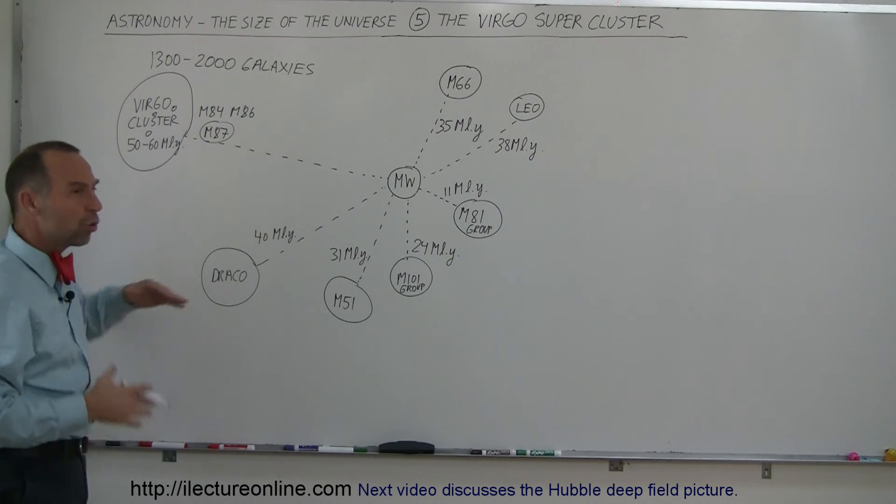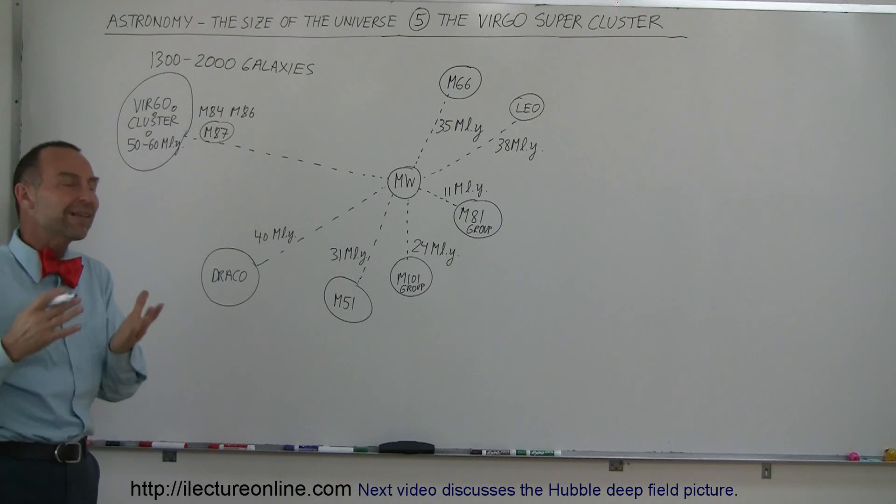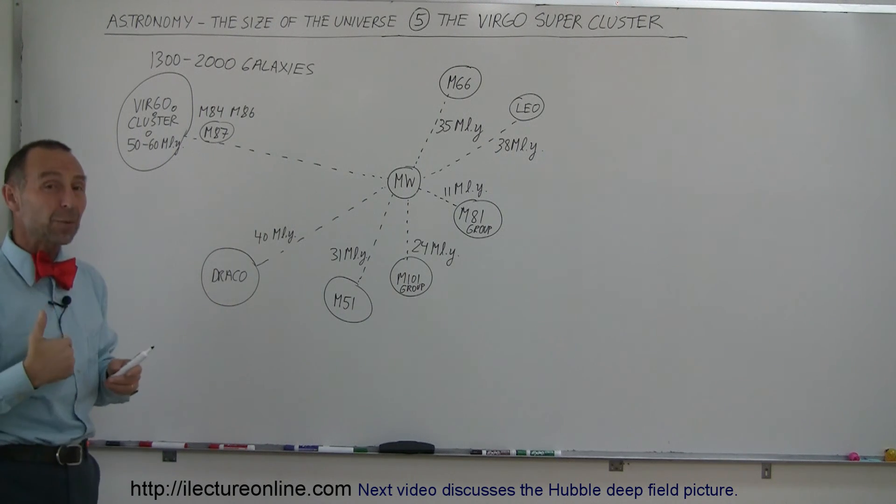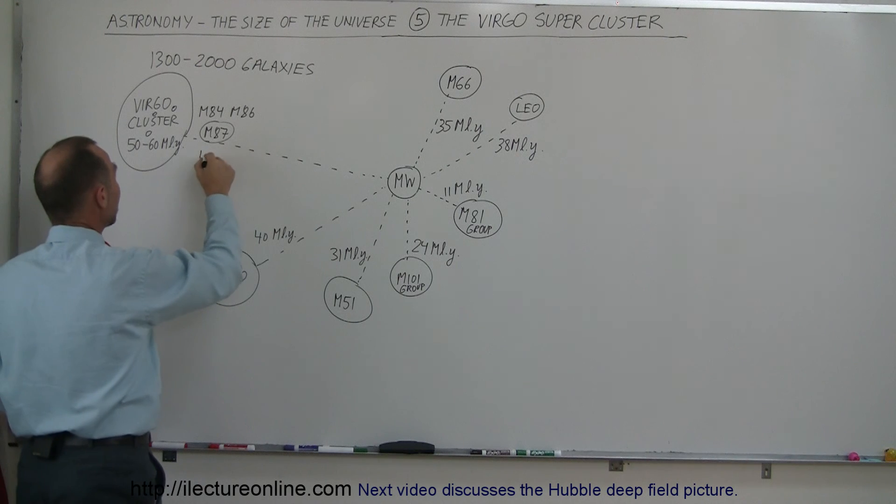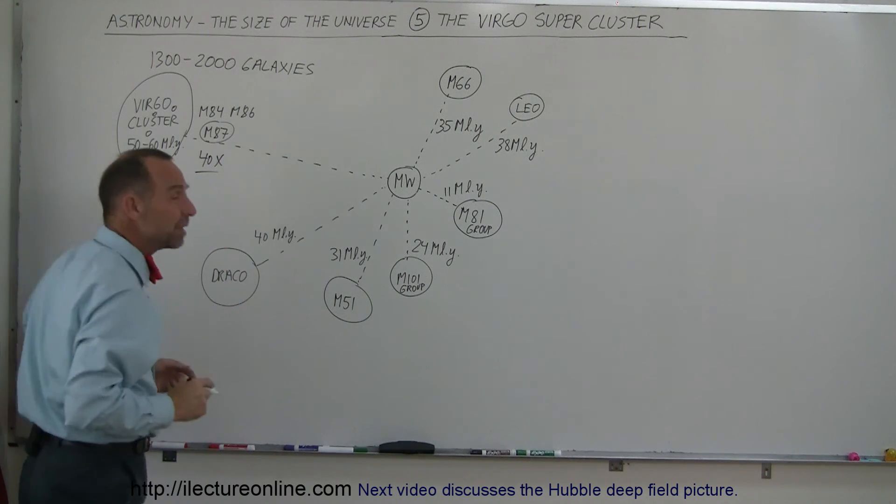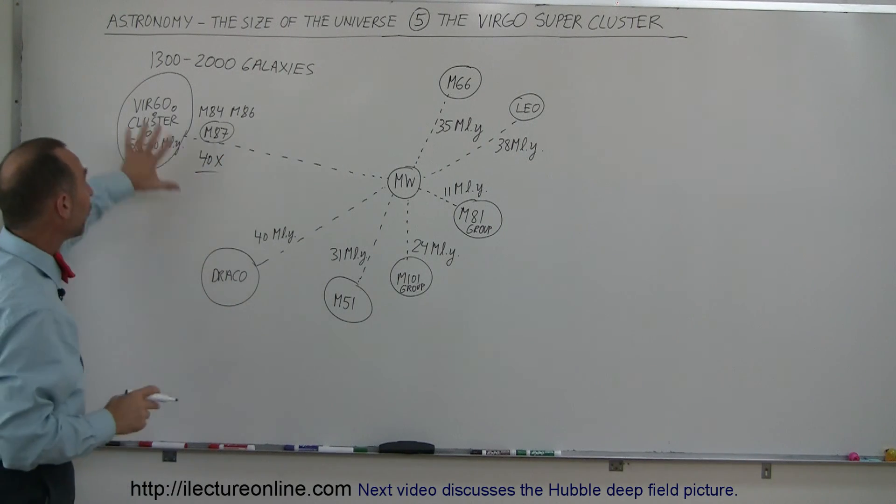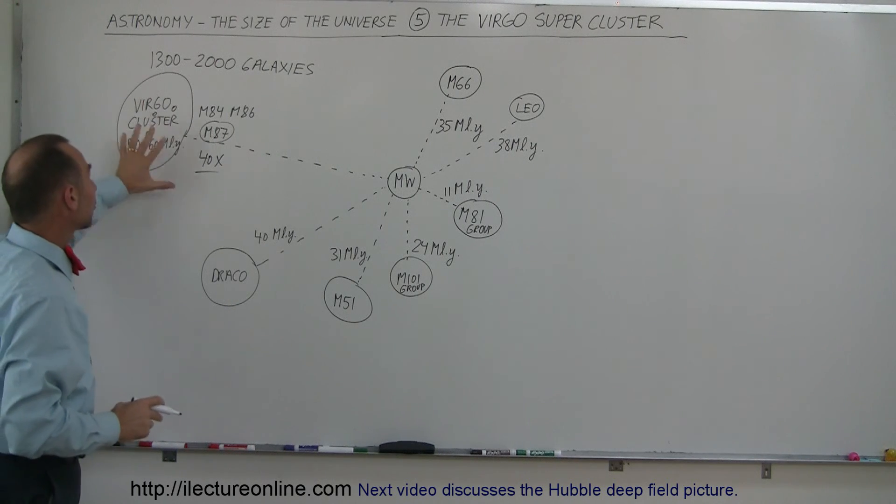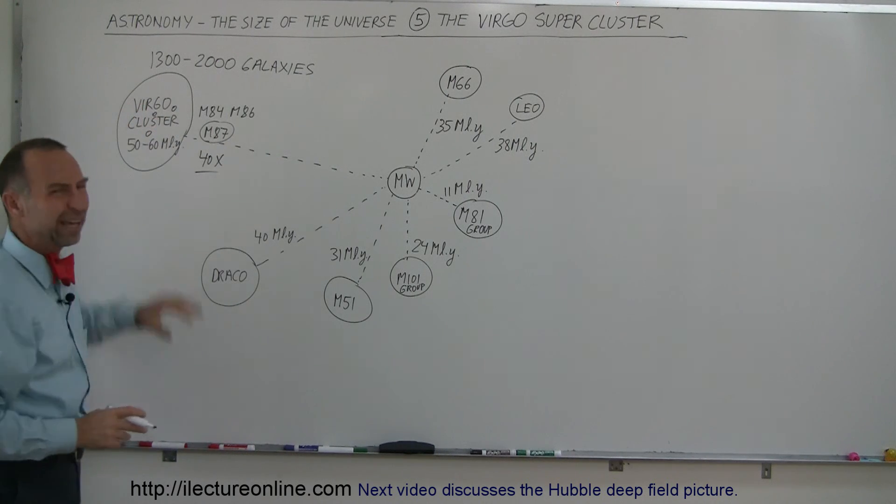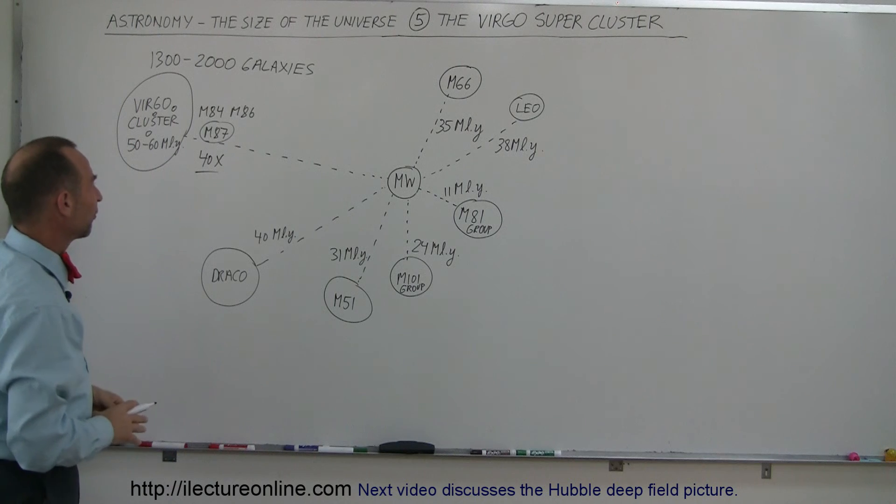And M87 is so huge, it has 40 times the number of stars in it than our own Milky Way galaxy. 40 times as big as the Milky Way galaxy, and it's just one of over 1,000 galaxies here in this cluster called the Virgo cluster. It's a fairly large cluster.